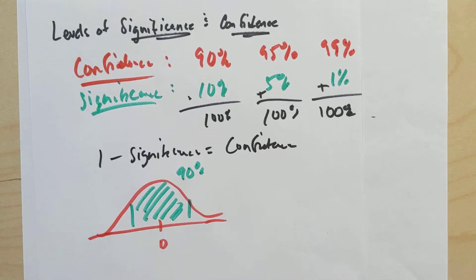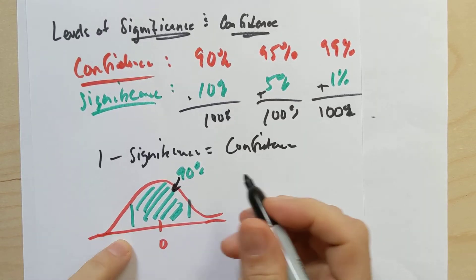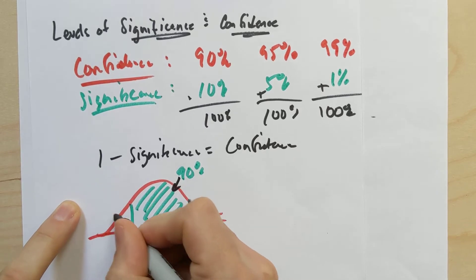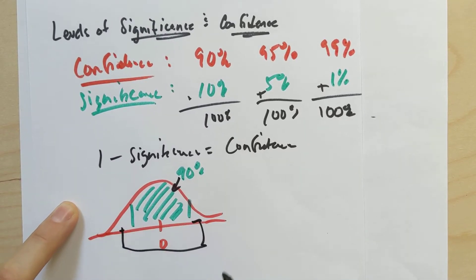we knew that you had to go out about 1.645 standard deviations from the mean to get to 90% confidence. Well, how much was left on the edges? Well, if this is 90% in the middle away from the middle of a distribution, then these two edges combined, this guy plus this guy, they would add up to 10%, right?